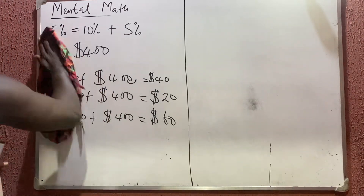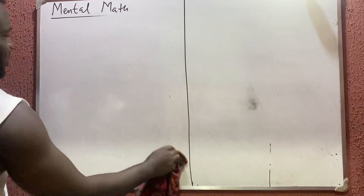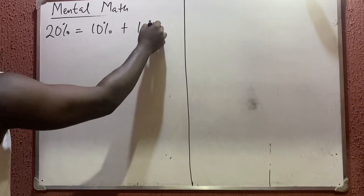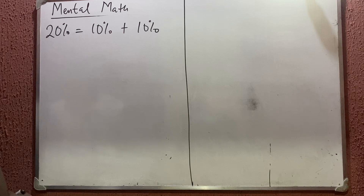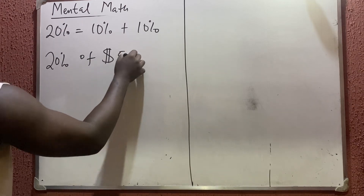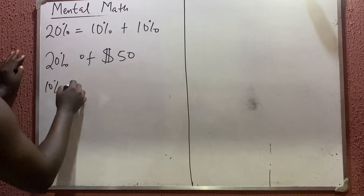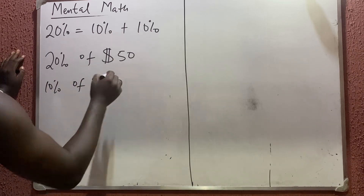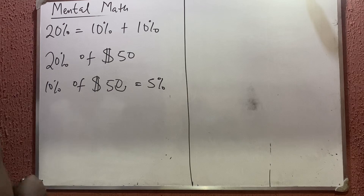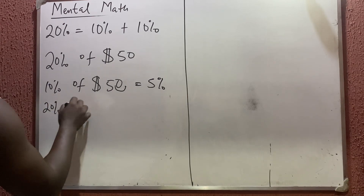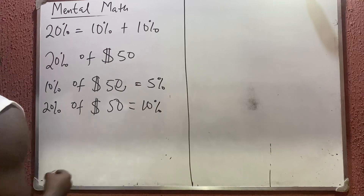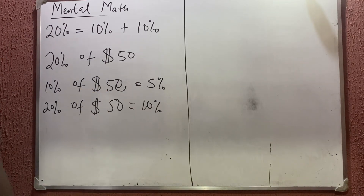Now let's go to 20 percent. To calculate 20 percent, you calculate 10 percent and then do another 10 percent, then add them together. For example, 20 percent of 50 dollars: there is no decimal point so put it at the edge and move one — that gives 5 dollars for 10 percent. Then 20 percent is simply 5 dollars times two, which gives you 10 dollars.